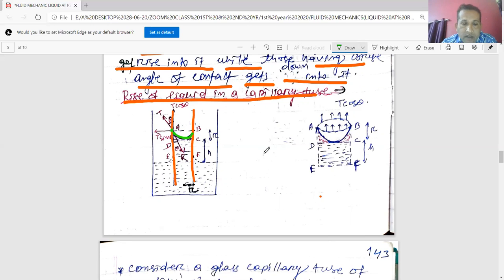So this T force of surface tension can be resolved into two components: upward T cos θ, horizontal T sin θ. And due to this T cos θ, this level is concave. And this resultant force is acting downward.